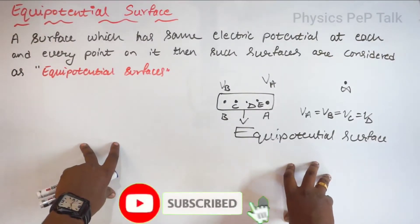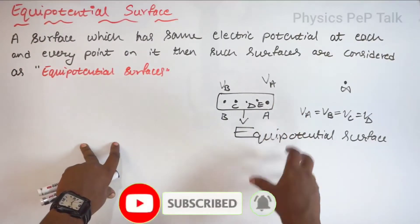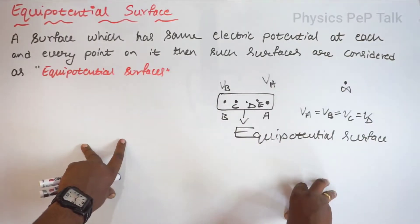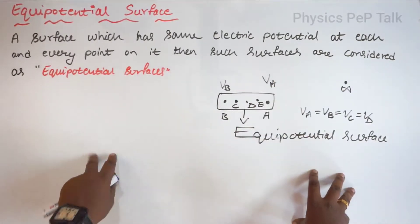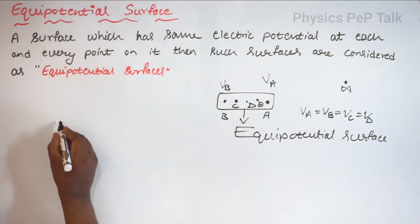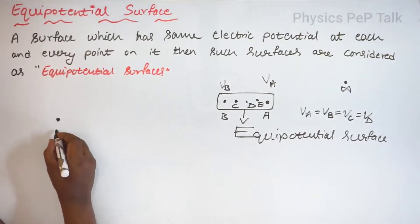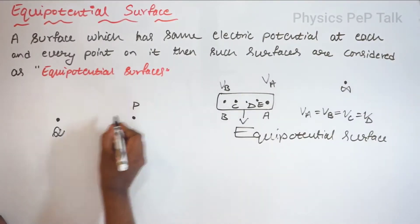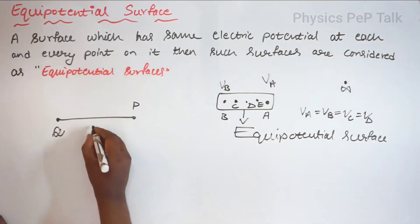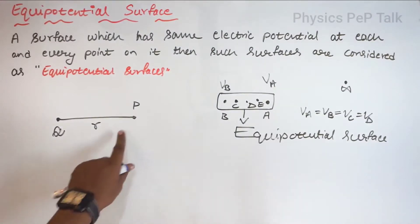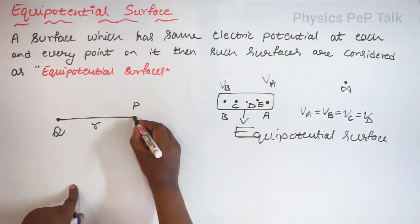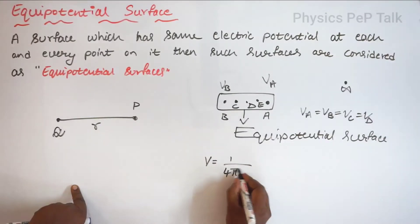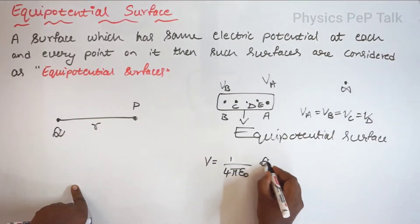An equipotential surface can be an imaginary surface or an actual surface. For example, consider a charge Q. I will consider a point P which is separated by a distance R. The electric potential at point P is given by V equals 1 over 4 pi epsilon naught times Q over R.